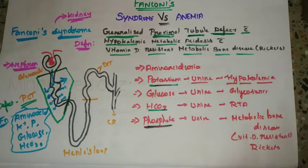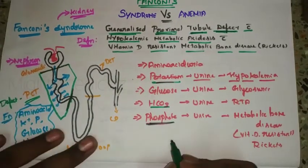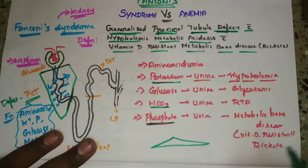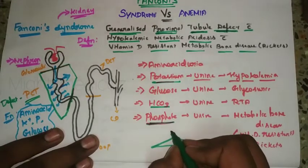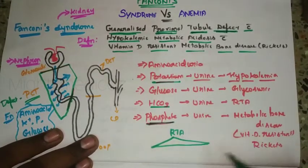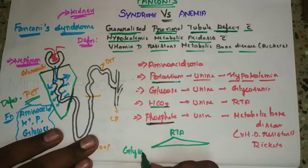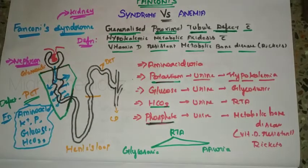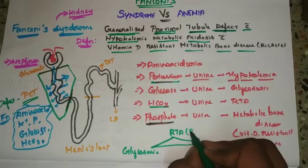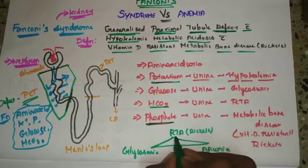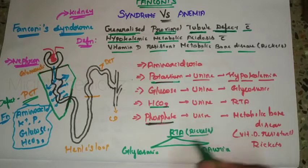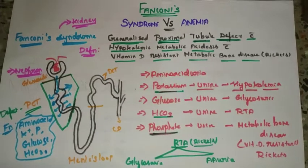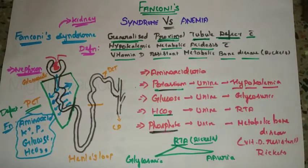This is exactly what Fanconi's Syndrome is. The classic triad of Fanconi's Syndrome consists of renal tubular acidosis, glycosuria, and aminoaciduria. Some also include rickets in the triad — rickets, RTA (renal tubular acidosis), glycosuria, and aminoaciduria.